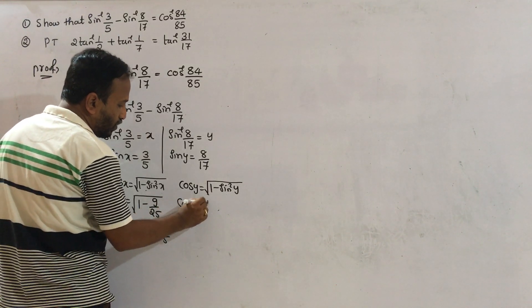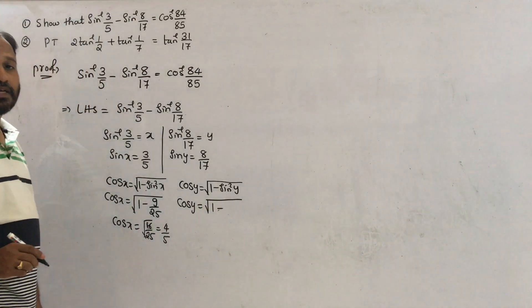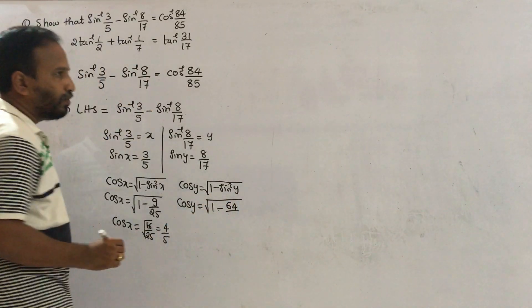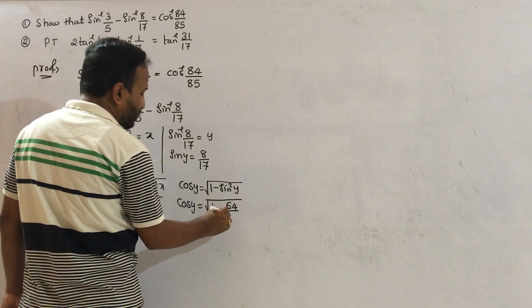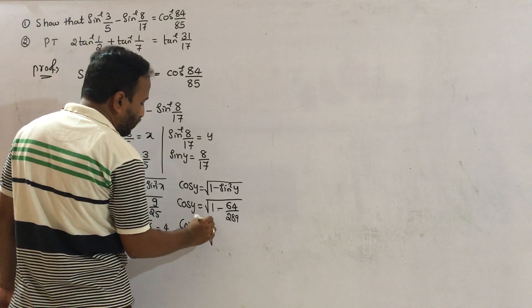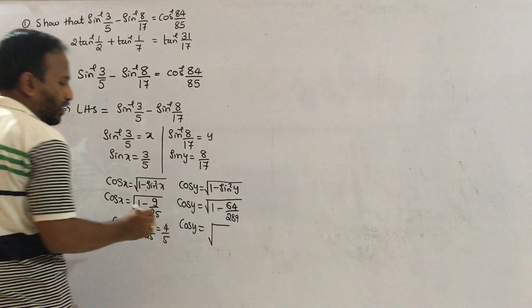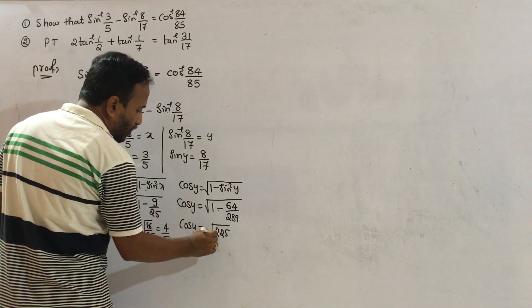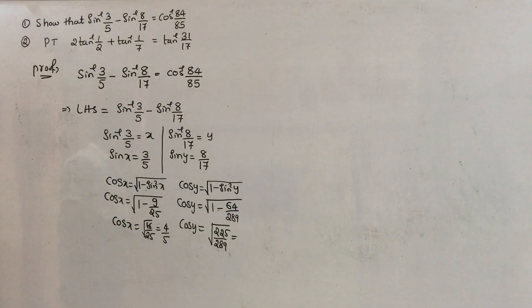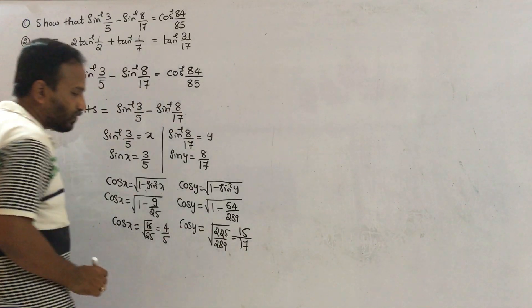Now, cos y equals square root of 1 minus (8 by 17) squared. That is 1 minus 64 by 289, which equals root of 225 by 289. So cos y equals 15 by 17.